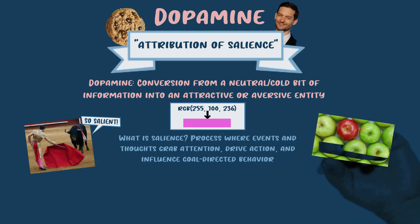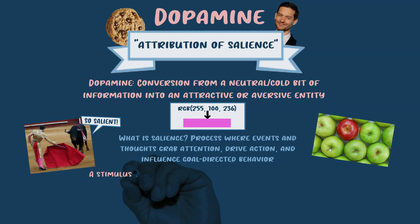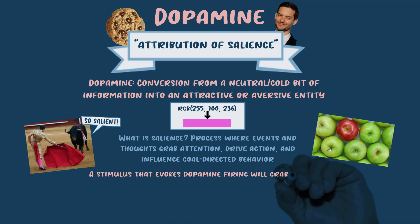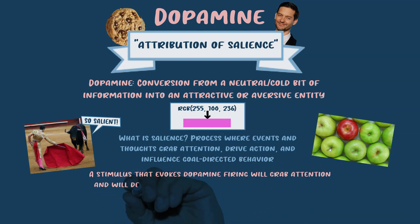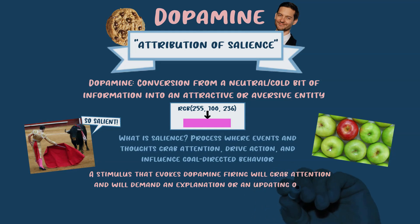A good example of saliency is a bull being drawn to a red sheet. In a group of apples, the salient one is the red apple — it sticks out. A stimulus that evokes dopamine is one that has salience — the dopamine firing will grab your attention, drive your action, influence your behavior, and demand an explanation or an updating of belief.